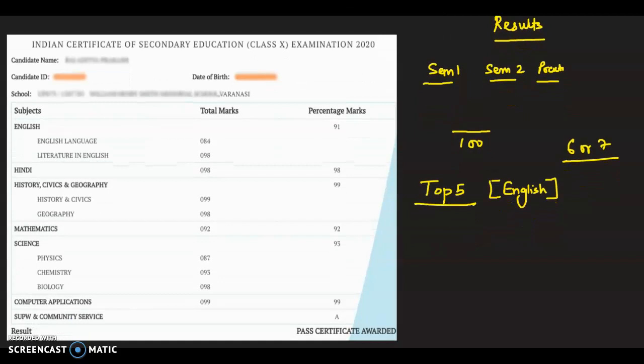Now, let's calculate. First, English marks, that is 91. Then 99, history, civics, geography. Then computer applications, that is again 99. Then we have to take 98, Hindi. And then science, that is 93.